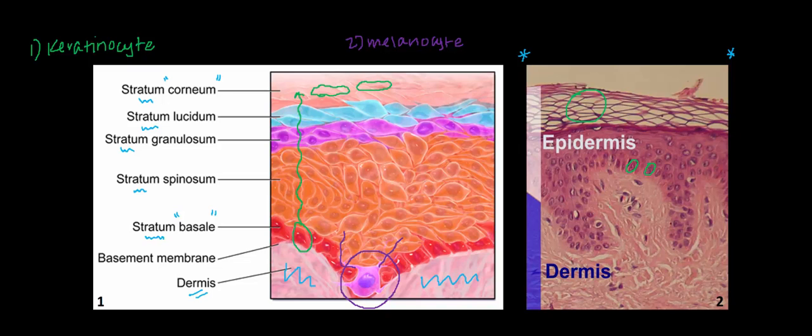If we jump over to the right to our H&E stain, this cell right here in the basal cell layer strikes me as a melanocyte. It's a little difficult to appreciate the finger-like projections on this particular stain, but the fact that it looks pretty structurally different than these keratinocytes we circled earlier, and it's located on the basal cell layer, clues me into the fact that it looks like a melanocyte.